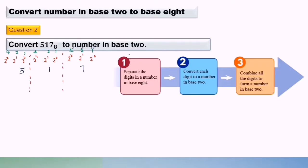Second step, convert each digit to a number in base 2. So how to convert it? So we look at the digit here, it's 7. So how to get 7? 1 plus 2 plus 4 equals 7. So we put 1, 1, 1. So means 1 times 2 power of 0 plus 1 times 2 power of 1 plus 1 times 2 power of 2. So equals 7 here.